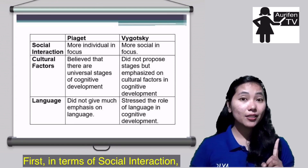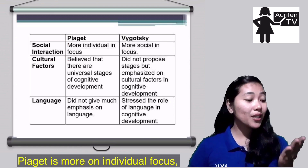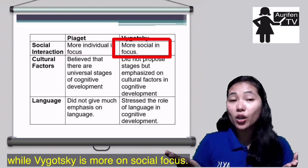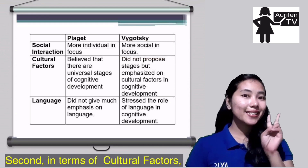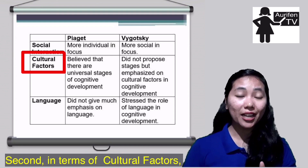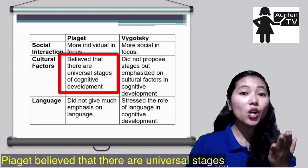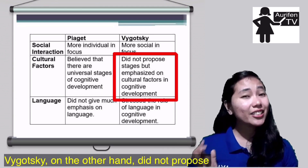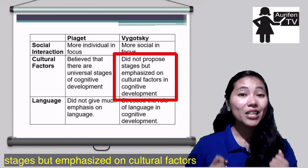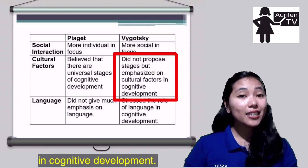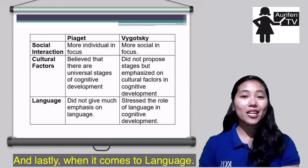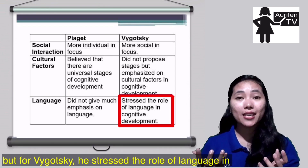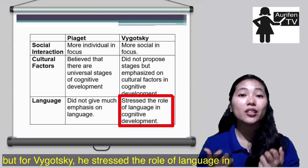In this table we can clearly see the differences in their beliefs. First, in terms of social interaction, Piaget is more individually focused while Vygotsky is more socially focused. Second, in terms of cultural factors, Piaget believed that there are universal stages of cognitive development, while Vygotsky did not propose stages but emphasized cultural factors in cognitive development. Lastly, when it comes to language, Piaget did not give much emphasis on language, but for Vygotsky he stressed the role of language in cognitive development.